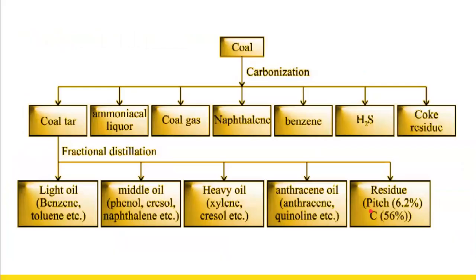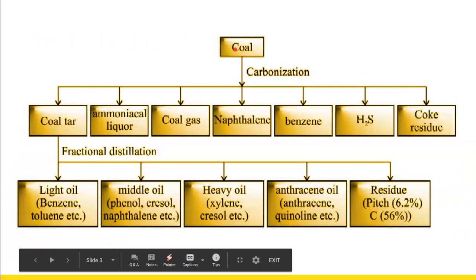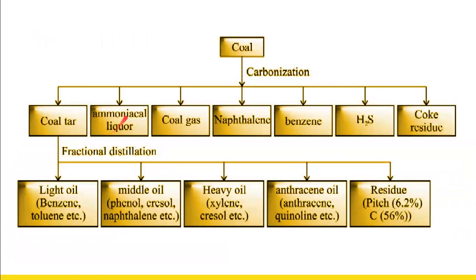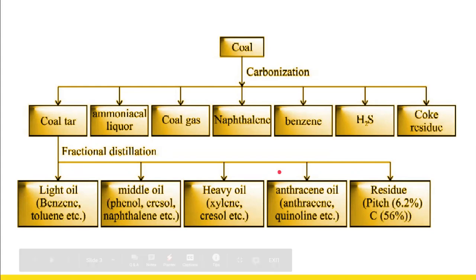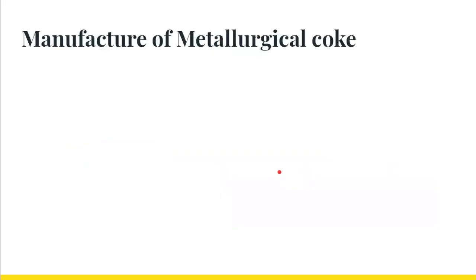Coal on carbonization gives various products other than coke, such as coal tar, ammonical liquor, coal gas, naphthalene, benzene, and H2S — all of these are byproducts. Even the coal tar can be further fractionally distilled to get different types of oils like light oil, middle oil, heavy oil, etc. Now let us discuss how we are going to manufacture metallurgical coke.